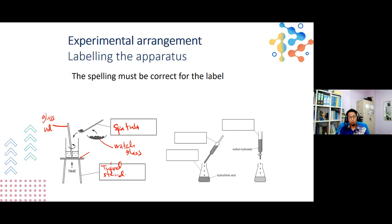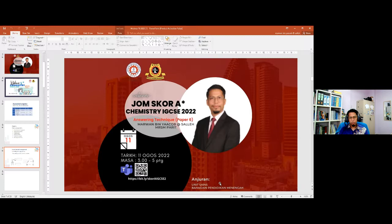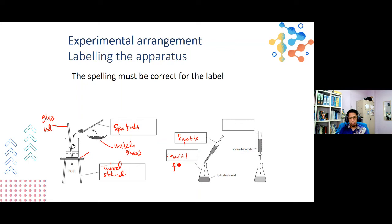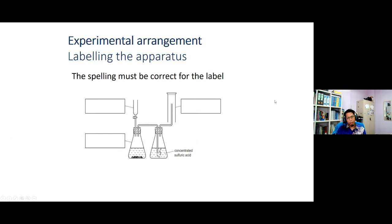Contohnya di sini adalah pipet dan juga conical flask. Ini adalah burette. Sekadar membuat latihan — terdapat beberapa lagi, contohnya ini mungkin pelajar boleh melabel — ini adalah dropping funnel, dan boleh juga melabelkan alatan-alatan lain dan sebagainya. Jadi pelajar bolehlah teruskan melabelkan alatan-alatan ini untuk menguji kemahiran. Ini sekadar contoh-contoh rajah yang boleh pelajar dapatkan.